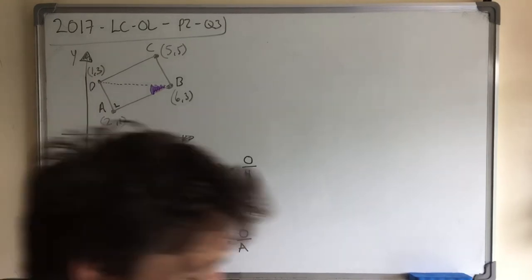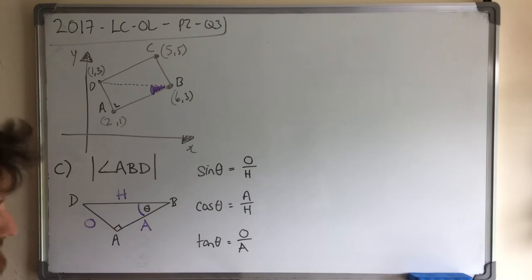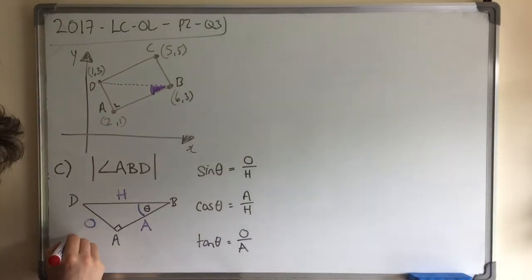Now we have to go back to the question and say, find the measure of the angle ABD. So let's look at what information we have. We were told earlier that A to D was square root 5. And we were told earlier, or we found out earlier, that A to B was square root 20.